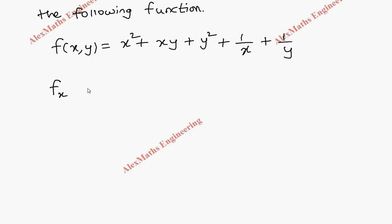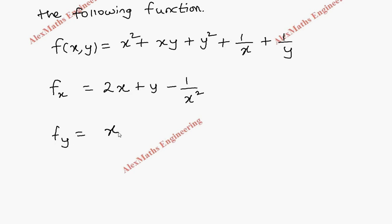For fx, the first term x² differentiates to 2x. Here y is constant so xy differentiates to y, y² is constant so it becomes 0, and 1/x differentiates to minus 1/x². The last term is purely constant so it is 0 on differentiation. Similarly for fy, the first term is 0, the second term gives x (since x is constant), then plus 2y, and 1/y differentiates to minus 1/y².